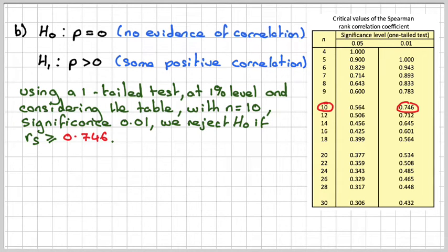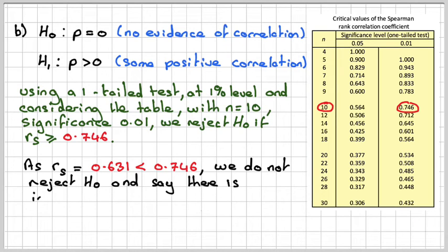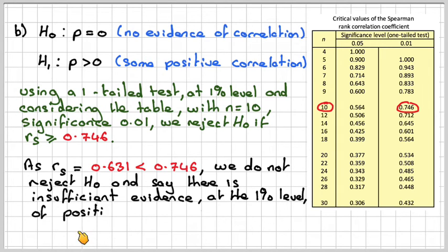So from the conclusion, as rs equals 0.631, it's less than 0.746. We do not reject H0 and say there is insufficient evidence at the 1% level of positive correlation.